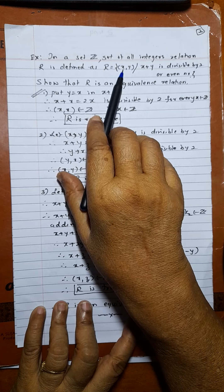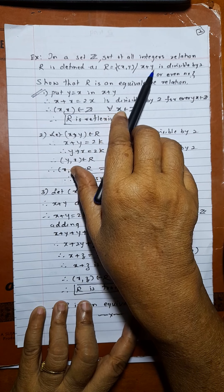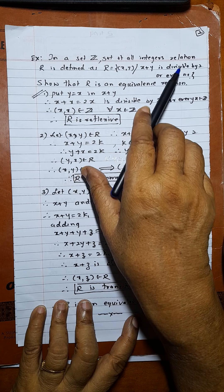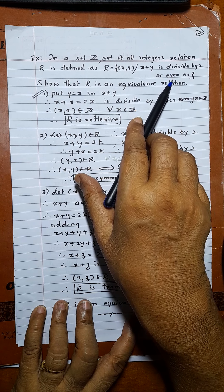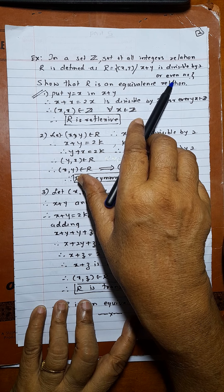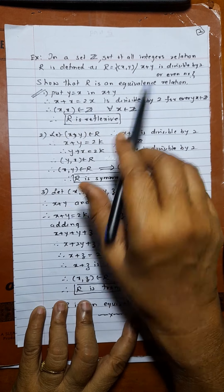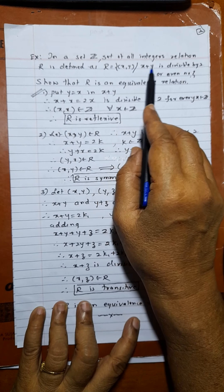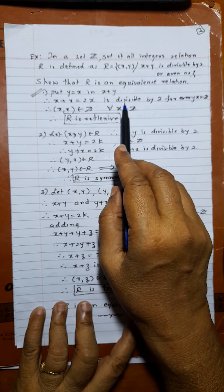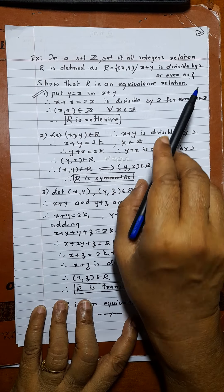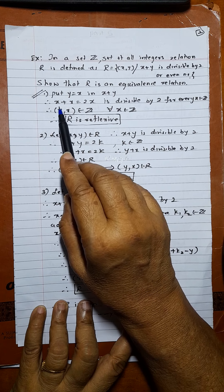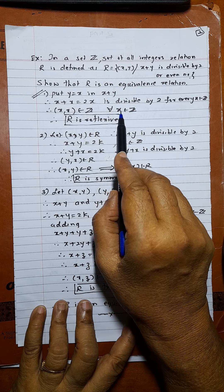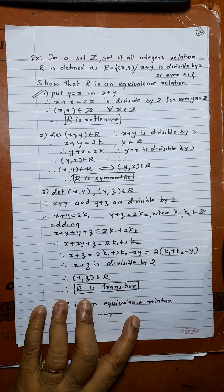Next problem: in the set Z of all integers, relation R is defined as R equals the set of (x, y) where x plus y is divisible by 2. Sometimes this is stated as x plus y being an even number — both mean the same, since any number divisible by 2 is even. We need to show R is an equivalence relation. For reflexive, replace y by x: x plus x equals 2x, which is divisible by 2 for every x from Z. Therefore x comma x belongs to R for every x from Z, and R is reflexive.